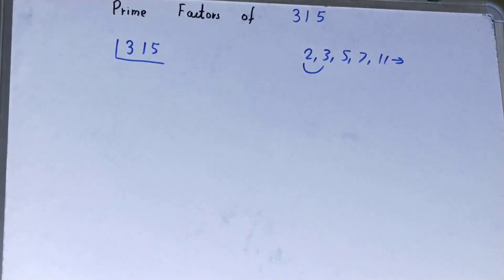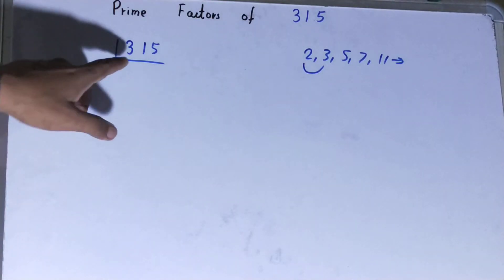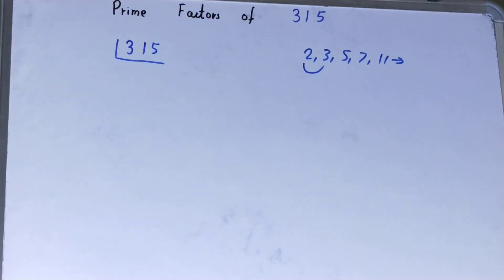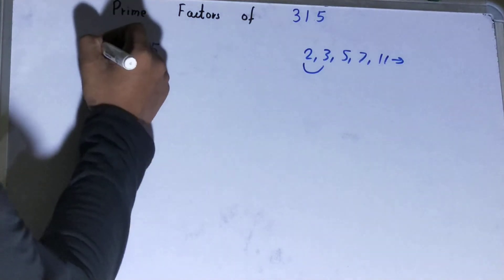Is the number 315 divisible by 3? If we check it, yes it is divisible. So divide it: 3 goes into 315, 105 times.